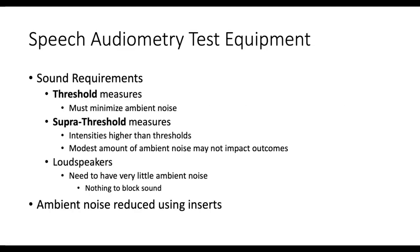We do some threshold measures — looking for the lowest level the individual can repeat words. Then we do suprathreshold measures, where we turn up the intensity to a more comfortable level above threshold and look at how well they recognize speech. When doing threshold measures, it must be very quiet.